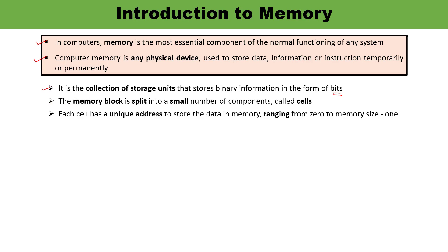The memory block is actually split into smaller components known as cells, and each cell has a unique address to store data in the memory. The address ranges from 0 to memory size minus 1.